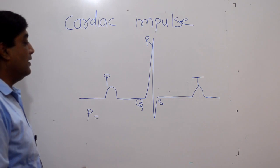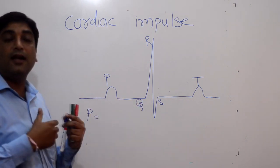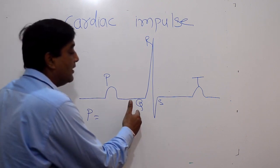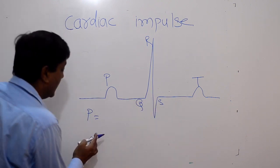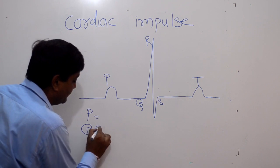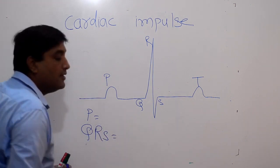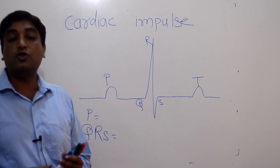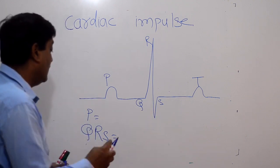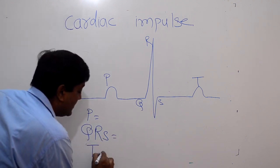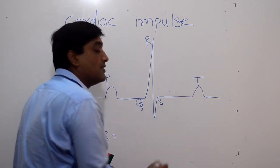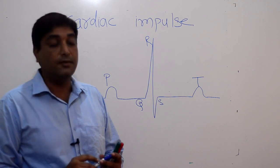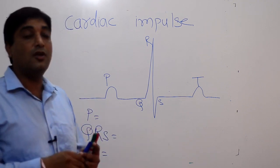Now as we said, this impulse will be passing from atria to ventricles, obviously through the AV node. We need to understand that this QRS complex indicates the ventricular activity, especially the depolarization of our ventricle. Now we have this T wave which conveys us the repolarization of our ventricle — that is the relaxation of our ventricle.